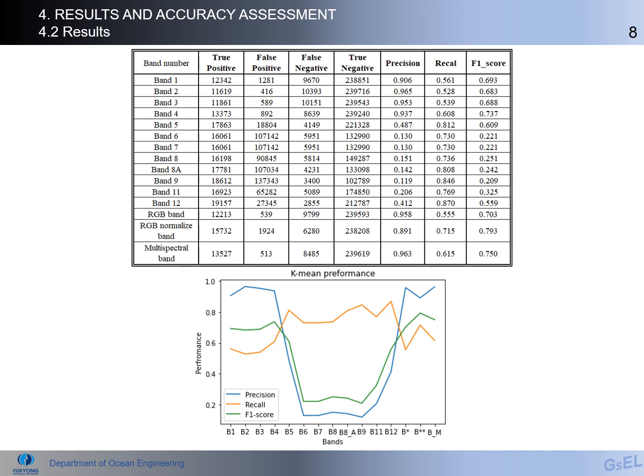This slide shows the results when using K-means for landslide detection across each spectral band — the RGB band, RGB normalized band, and multispectral band. For bands 4, 2, 3, and 4, there is high precision and stable recall, from band 5 through to band 11.